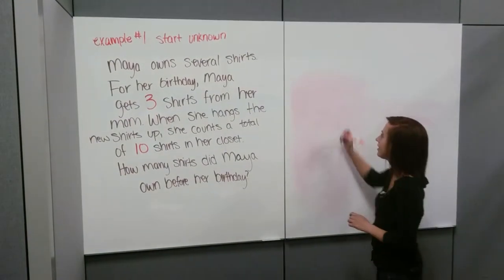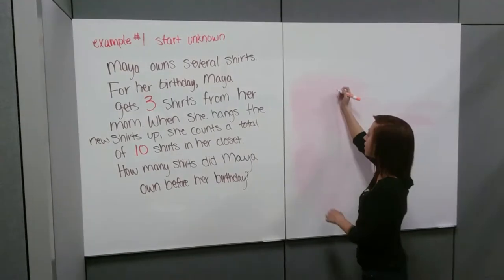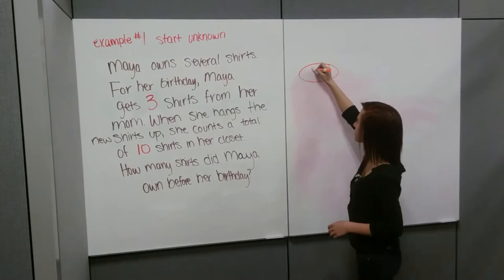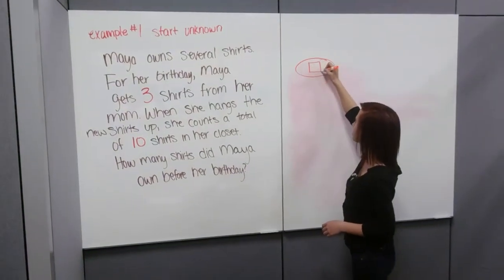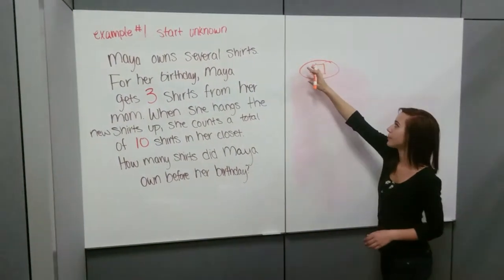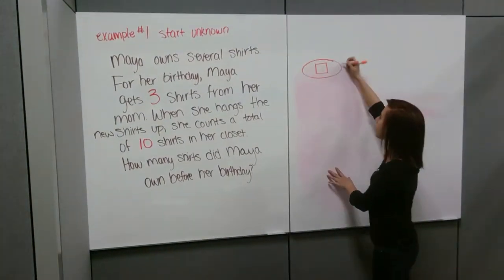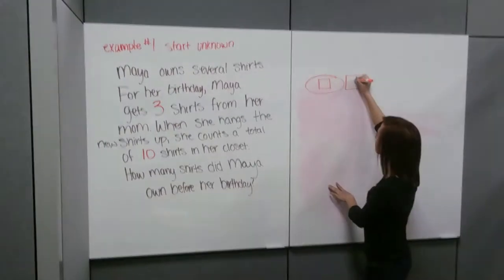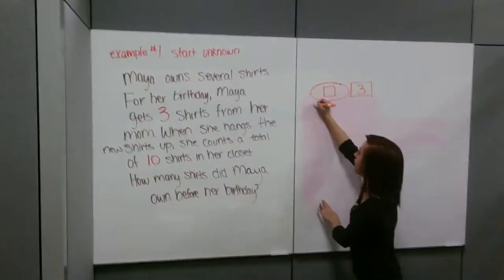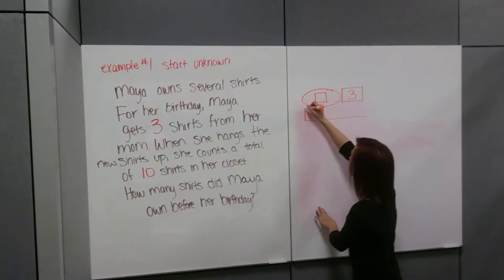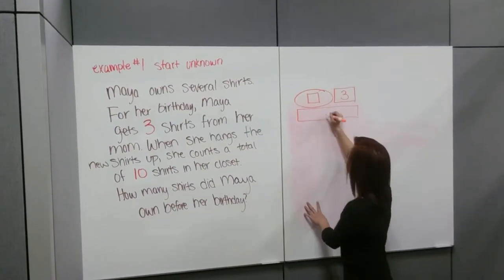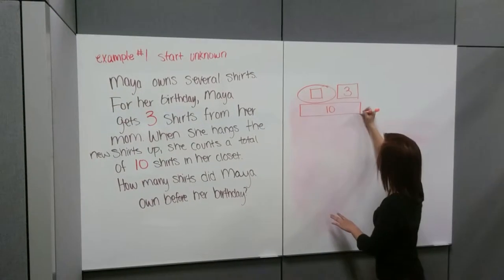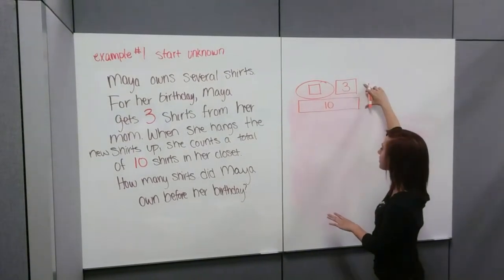For this one, since the start is unknown, if we were going to draw a strip diagram, we'd start off with a circle. In this circle, we're just going to put a box, which represents the unknown number. We don't know what that is yet. And then we add three onto that because Maya gets three more shirts. And then we put our total down here, and our total is ten — she had ten shirts in her closet at the end. That's what our strip diagram would look like.